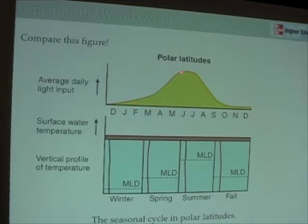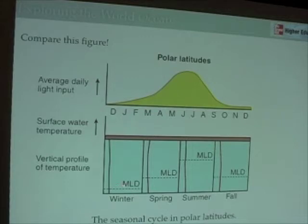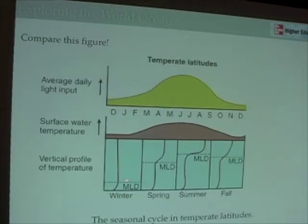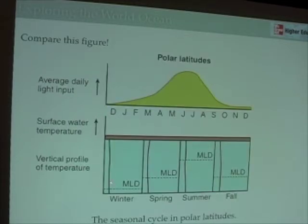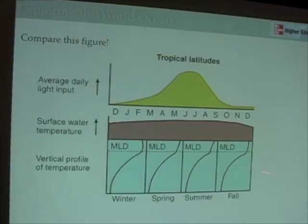In polar latitudes, sunlight is really focused into the summer months. We only have a peak of long days — really 24-hour days — and sunlight gets more intense only during the summer. As a result, we have just a slight heating and formation of a shallow mixed layer and thermocline in the summer. So comparing that back with temperate latitudes, we have a more stepwise process in temperate latitudes, whereas in polar latitudes this stratification really only happens in the summertime, and it's weak stratification at that — though still very important for the seasonal cycle.